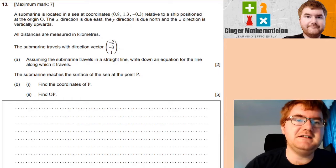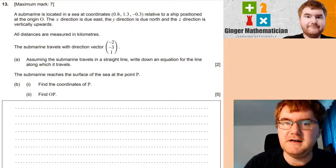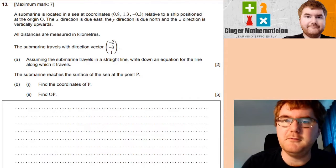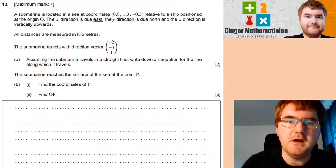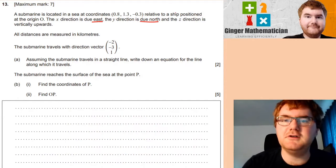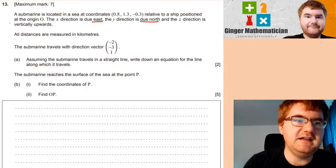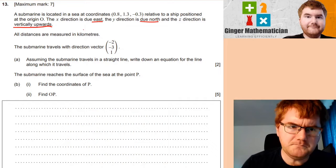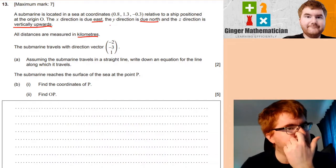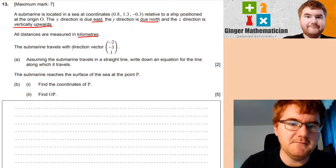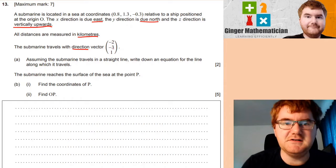So a submarine is located in a sea at coordinates (0.8, 1.3, -0.3) relative to a ship positioned at the origin O. The x direction is due east, the y direction is due north, and the z direction is vertically upwards. All distances are measured in kilometres. And the submarine travels with a direction vector (-2, -3, 1).